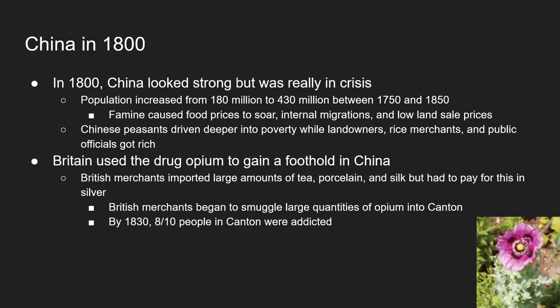British merchants imported large amounts of tea, porcelain, and silk from the city of Canton in China, and expected the Chinese to buy British goods in exchange. But in reality there were few British manufactured goods that the Chinese wanted. So the British were forced to pay for Chinese goods with silver. To balance the cost of imports, the British turned to opium, which was produced in surplus in their colony of India. It's the sale and use of opium driven by the British that really got them into the country.